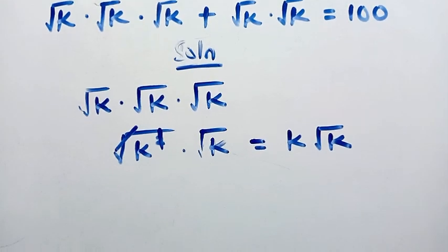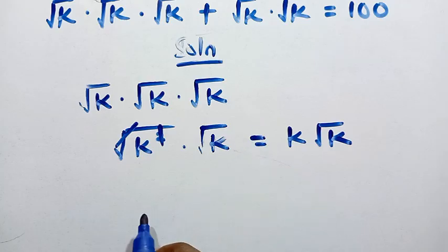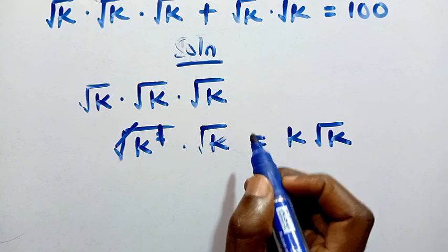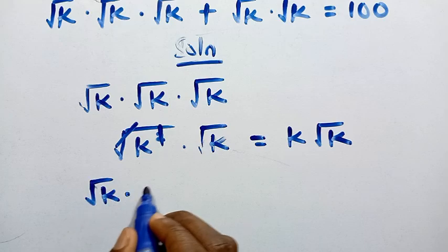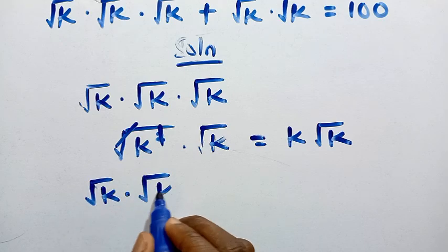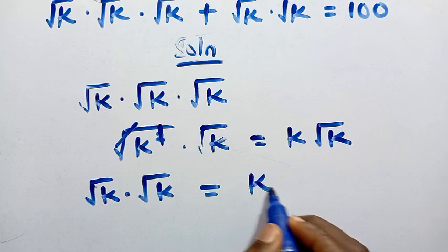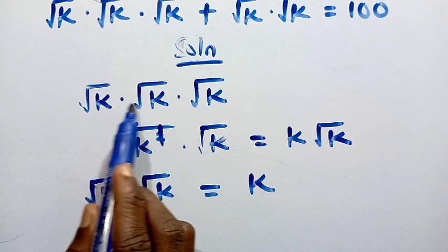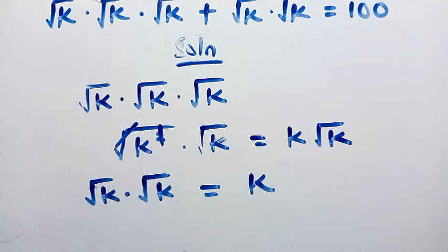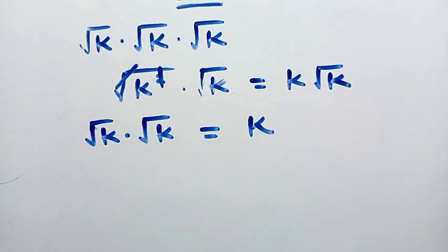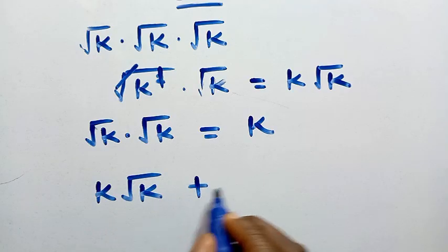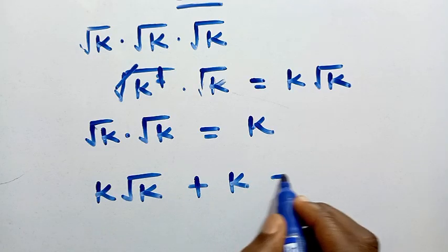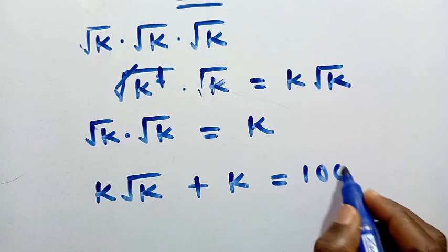When we proceed, the other part is √k × √k. Multiplying √k by √k gives us k, as we already established. Combining both parts together, we have k√k + k = 100.